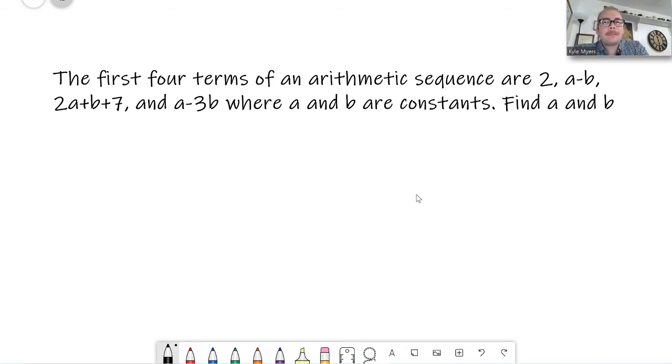There's four terms. It says the first four terms are 2, a minus b, 2a plus b plus 7, that's a mouthful, and a minus 3b, where a and b are constants, which just means that a and b are numbers that we're going to find out in a second. They're letters, and we're going to try to figure out what the letters are. Find a and b.